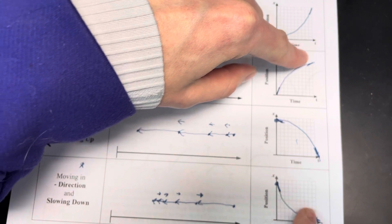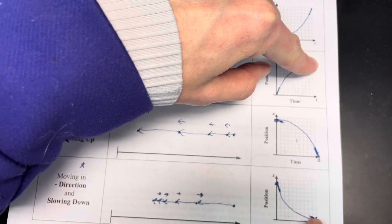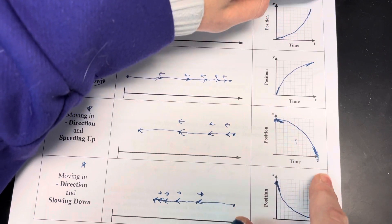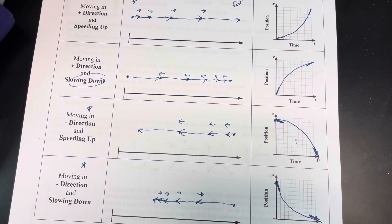Notice how in my slowing down ones, both of these are going toward flat. In my speeding up, both of these are going toward steep. That's what they have in common.